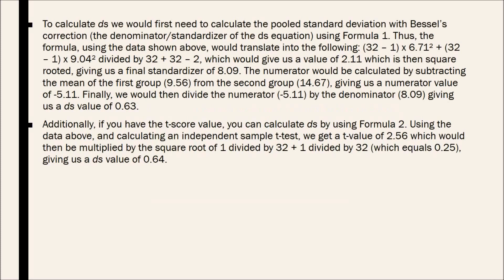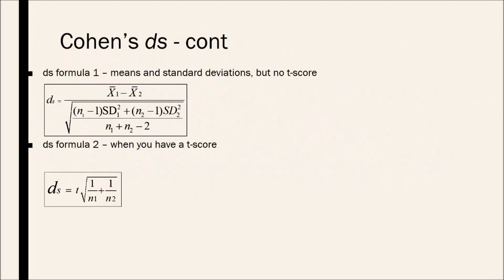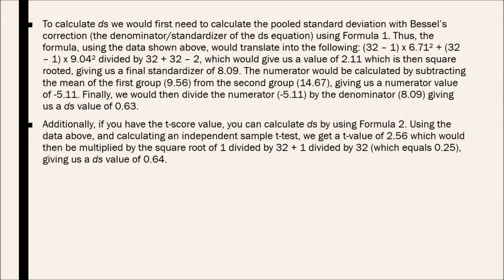So to calculate DS, we would first need to calculate the pooled standard deviation of Bessel's correction. And this is using formula 1. So you can see the whole part in that square rooted area, that's pretty much to calculate the pooled standard deviation. Thus the formula using the data shown above would translate into 32 minus 1 times the first standard deviation divided by 32 plus 32 minus 2, which would give us a value of 2.11 which is then square rooted, giving us a final standardizer of 8.06. The standardizer here would be the denominator, but for effect size, we call it a standardizer.